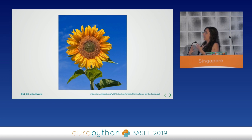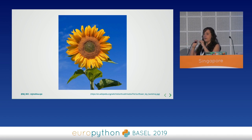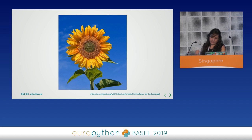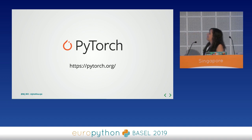What our brain and body are doing is analyzing the picture — analyzing shapes, colors, small parts — similar to what some machine learning models do. Here I'm going to talk a bit about the PyTorch model.